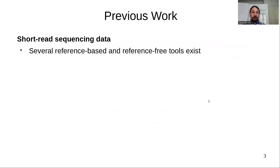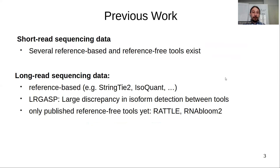For existing tools for short-read sequencing data, there exist several reference-based and reference-free tools already. However, for long-read sequencing data, there exist some reference-based tools, such as StringTie2 and IsoQuant. However, the LRGAS consortium found a large discrepancy in isoform detection between tools. The only published reference-free tools up to this point are RATTLE and RNABloom2, with RNABloom2 just having been released some weeks ago.